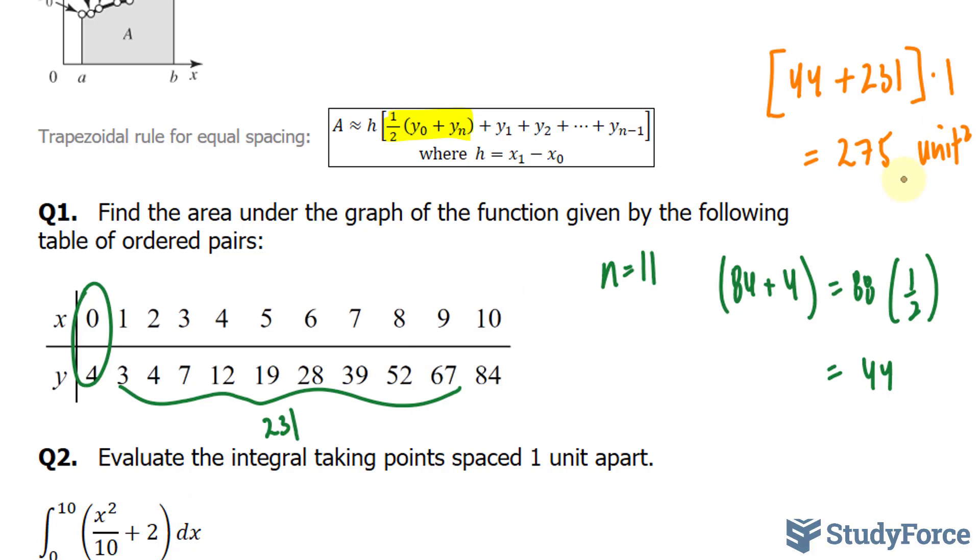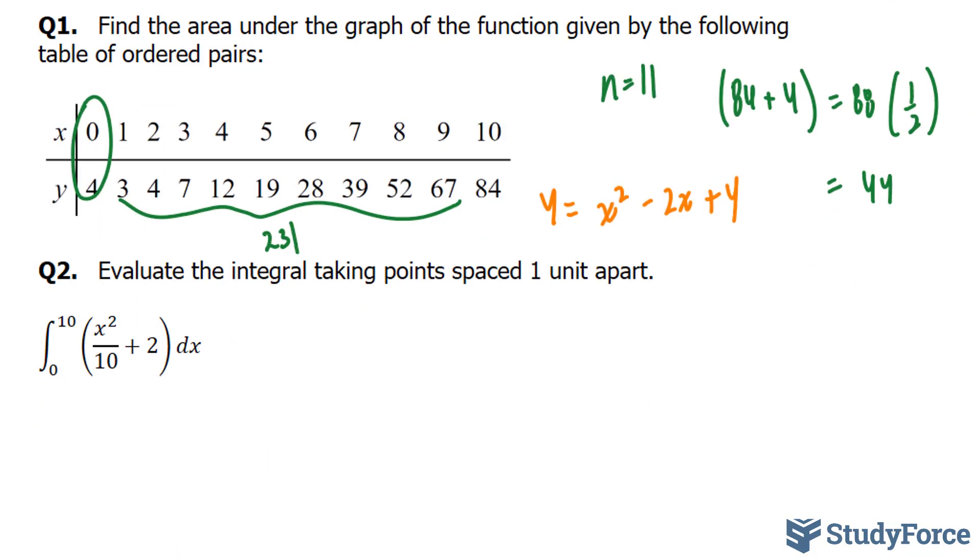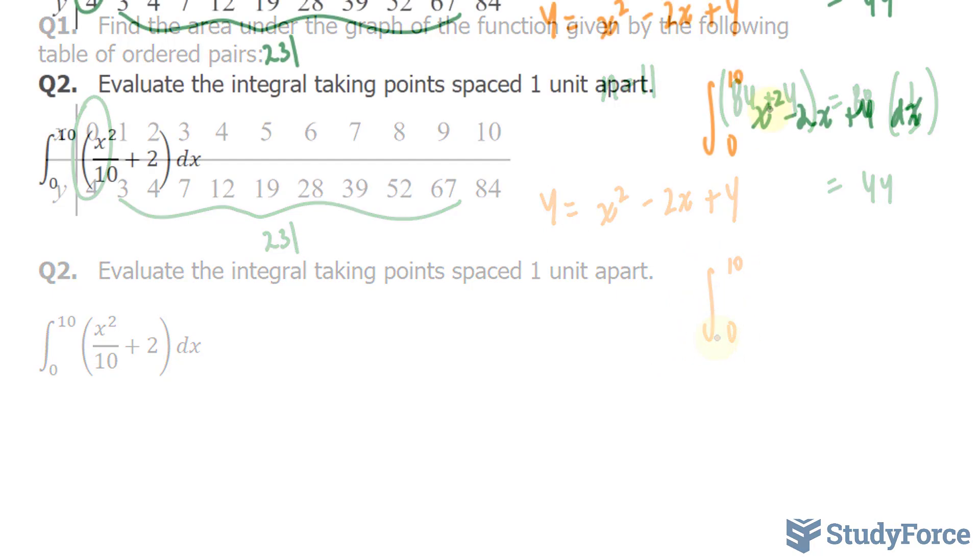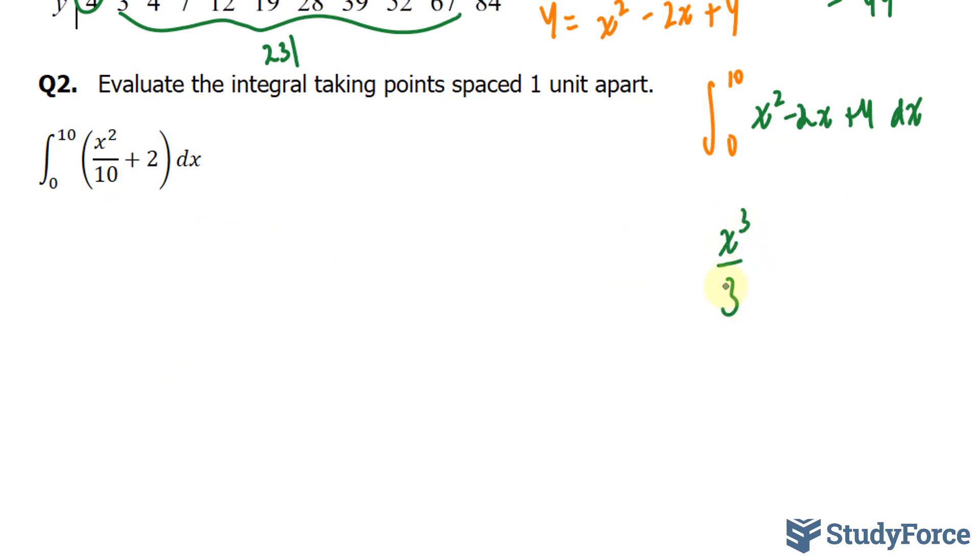As a check, we note that the points given are actually points on the curve y is equal to x squared minus 2x plus 4. Now here's the interesting part. We're going to actually compare the actual area versus the approximate area that we found. And what we will do is take the integral of this function between 0 and 10. The antiderivative of this first term is x to the power of 3 over 3. The antiderivative of this term is minus x squared. And the antiderivative of this term is plus 4x. And I'll evaluate this at the upper and lower bound. Evaluating this at the lower bound gives us 0.